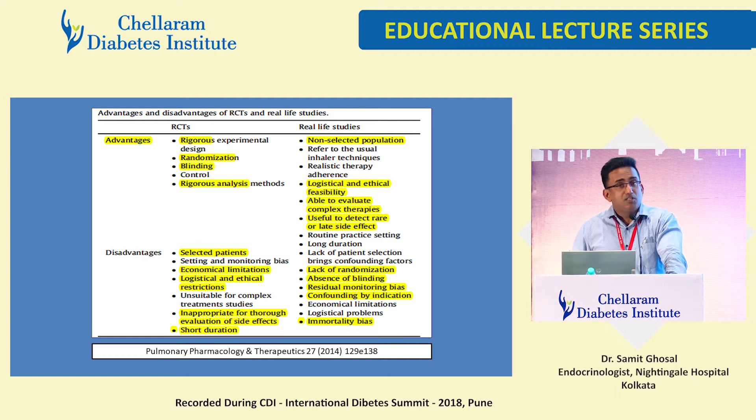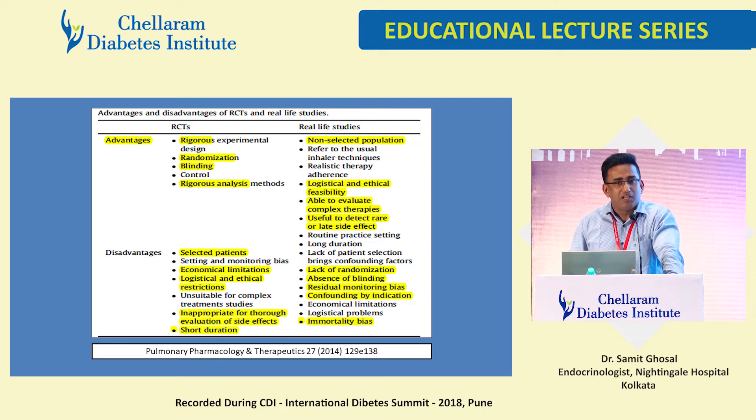The disadvantages of real-life data include the absence of randomization — with eyes open, you select patients you want to select and are extremely biased. There is also immortality bias, which I'll show appears in some real-life data.